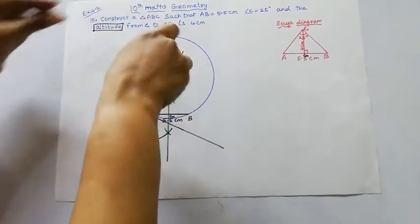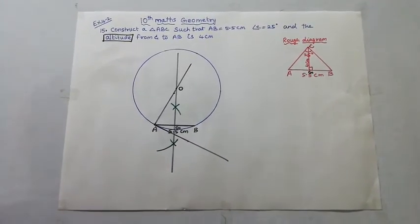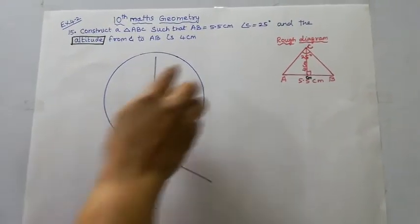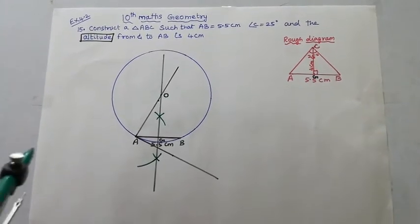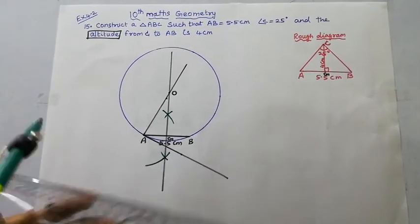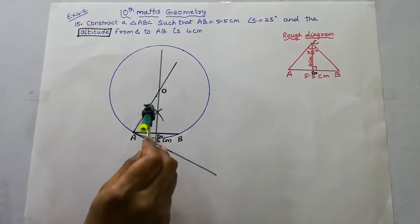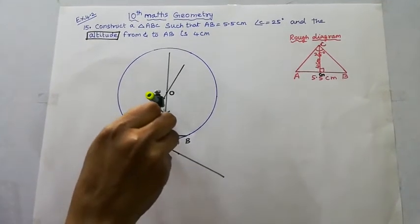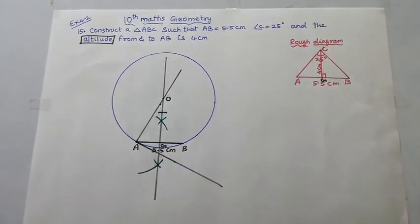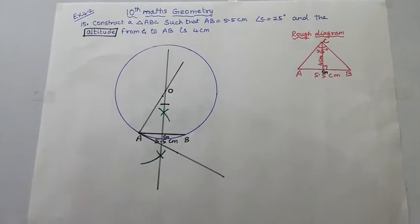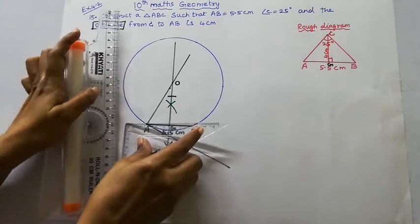Draw a circle around the midpoint. The altitude from C to AB is 4 centimeter — so we measure 4 centimeter. Using the perpendicular bisector on the line, we cut at the right point. Then, using a set square, we get the required measurement.